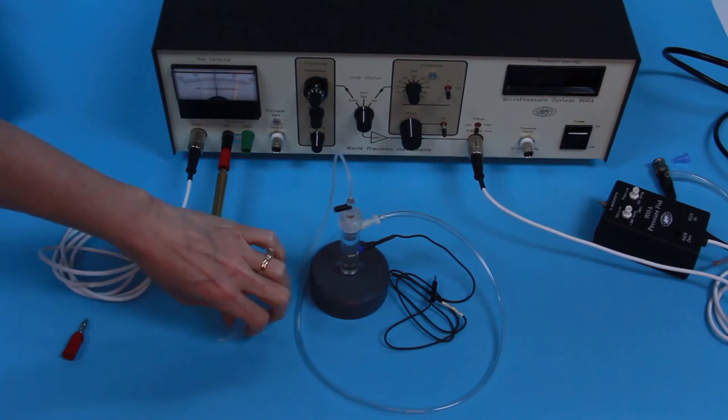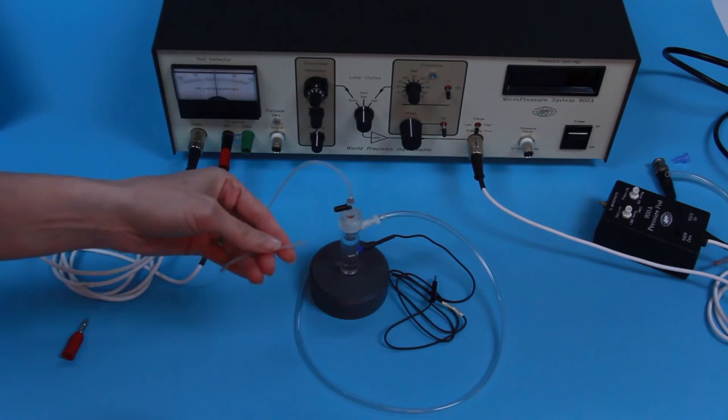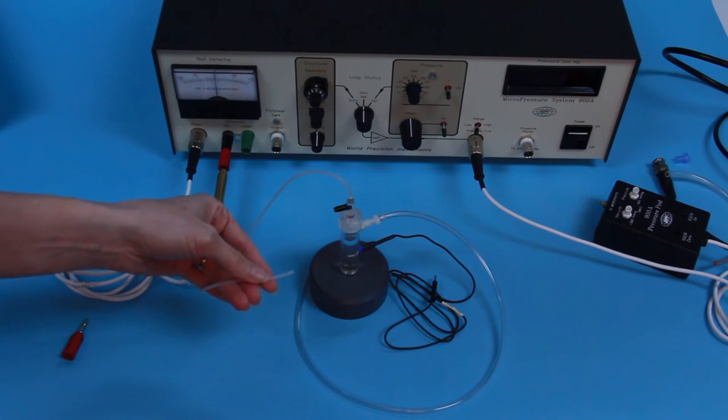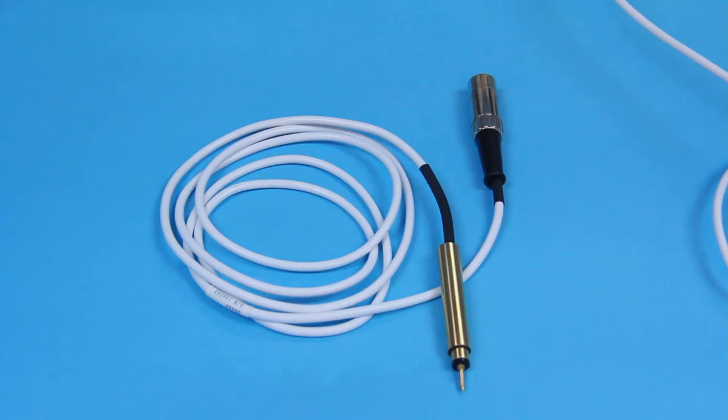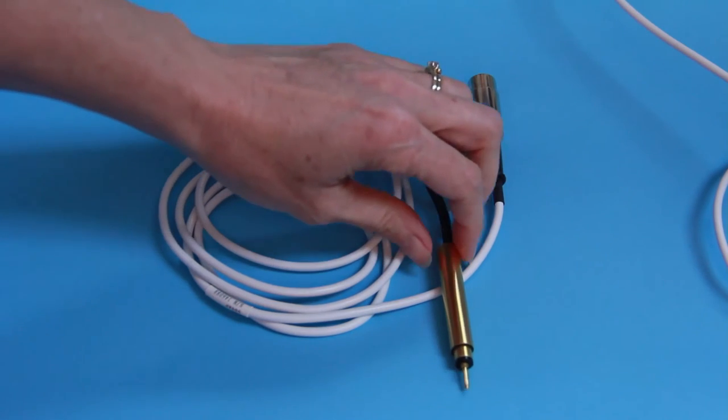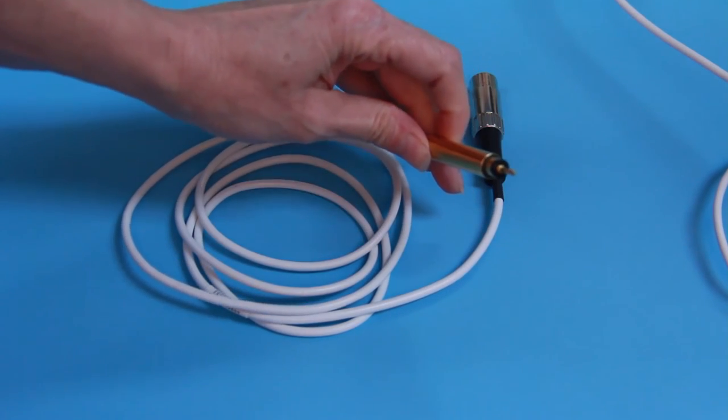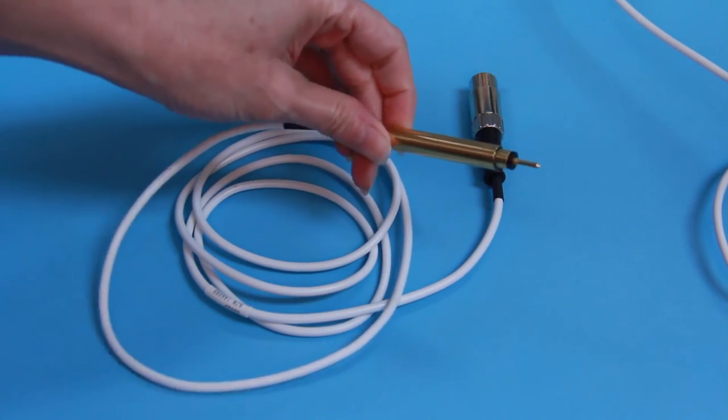The residual volume of the pressure chamber includes the micropipette, the connecting tubing, and the pressure transducer on the outlet side of the piezoelectric valve. The 900A accurately controls and adjusts the pressure in the chamber to match pressures applied externally to the microelectrode tip.